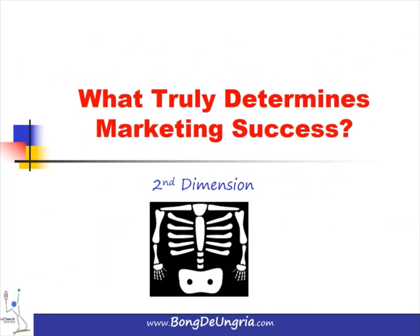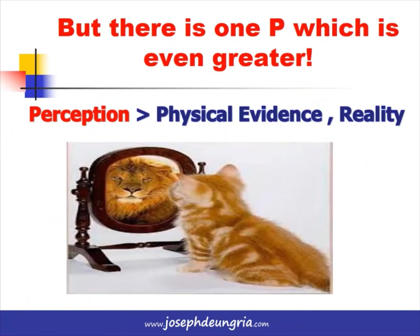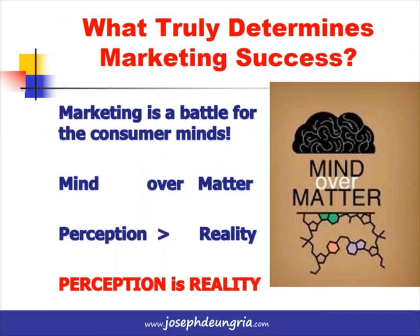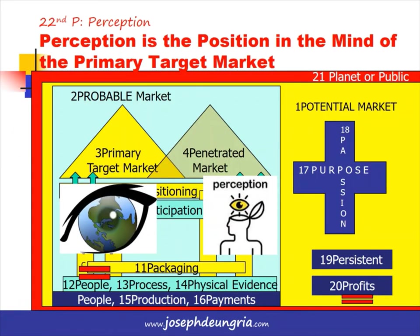The second dimension answers the question: what truly determines marketing success? Is it reality? Is it physical evidence? Actually there's one factor even greater than physical evidence, and that is Perception. Marketing is a battle for the consumer's mind, and what the consumer's mind thinks — whether it's reality or not — wins. The 22nd key is perception: how our mind sees and remembers the world. We want to be perceived in the correct position in the mind of our primary target market.